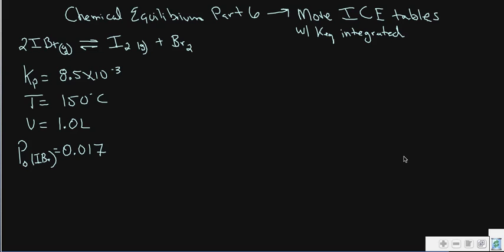Hello, we're back with a little bit more chemical equilibrium. This time I thought it would be a good idea to do a more complicated ICE table problem that integrates Keq — an equilibrium constant expression. In this case, I have the reaction of iodine bromide gas turning into iodine and bromine gas. The partial pressure equilibrium constant Kp equals 8.5 times 10 to the negative third.